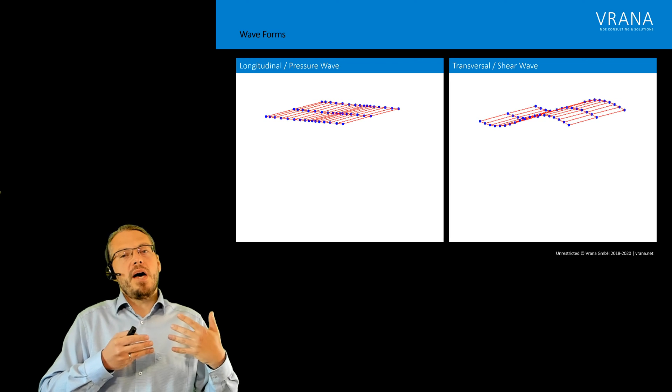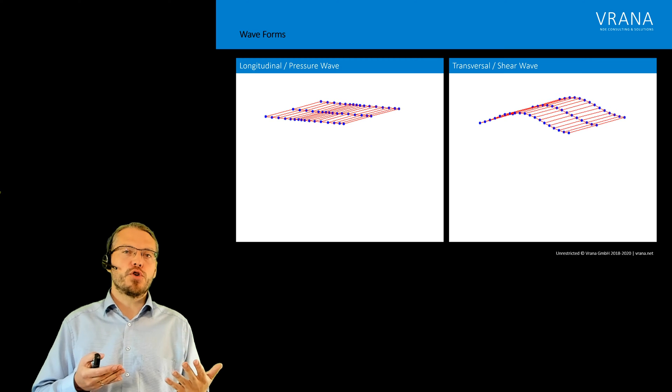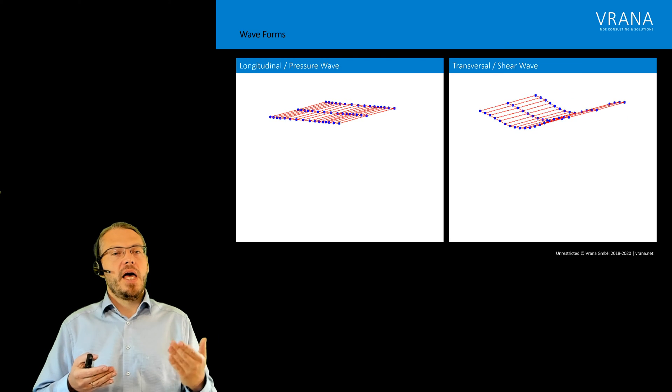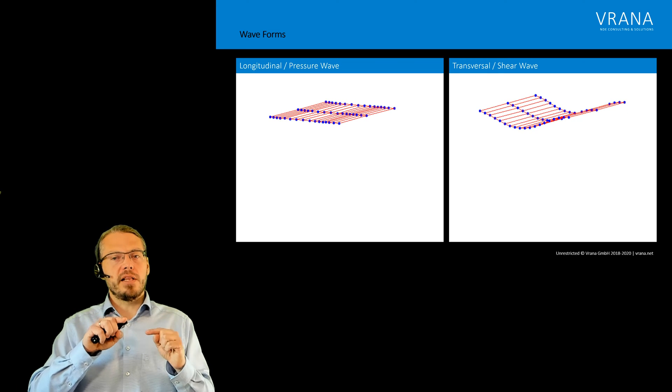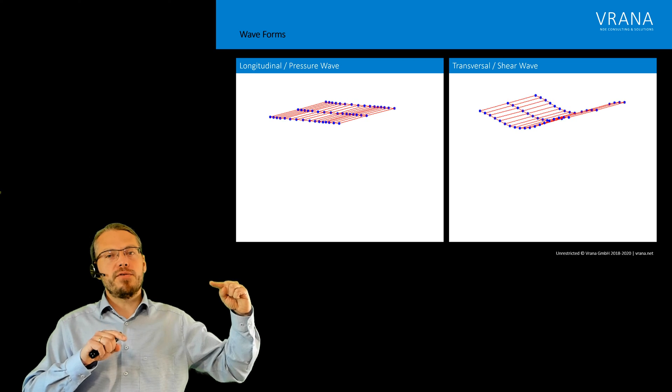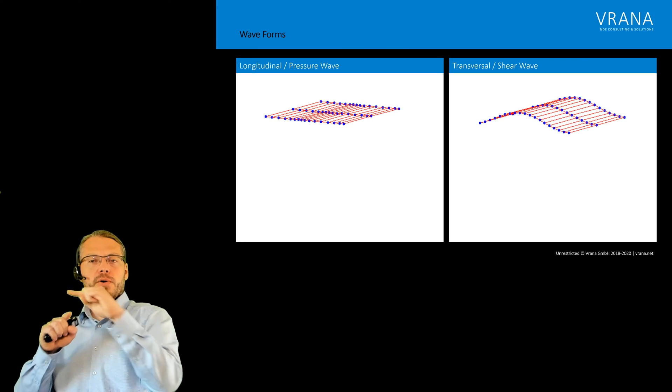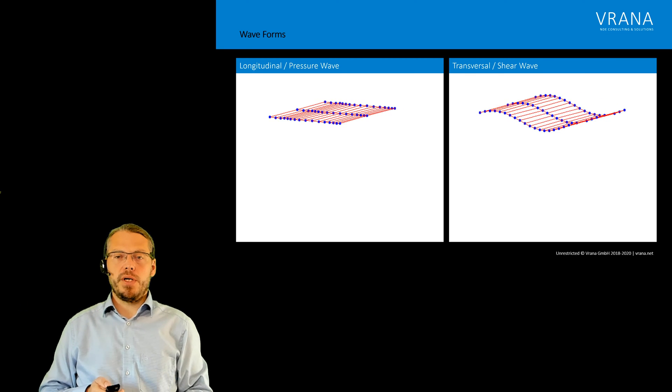Now we have a second waveform which we can have in our component and that's called a transversal or shear wave. In that case, our excitation is going perpendicular to our propagation direction. So if my wave is propagating this way through our component, then our oscillation is going up and down as it is shown here.